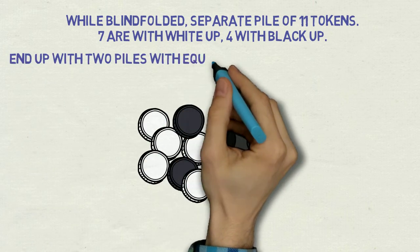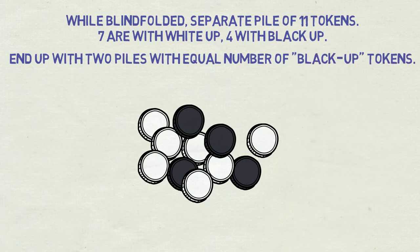Your task is to separate those 11 tokens into two piles so that in each pile there is an equal number of tokens with black side up. You must use all the tokens and you cannot feel what color is on each side, obviously.